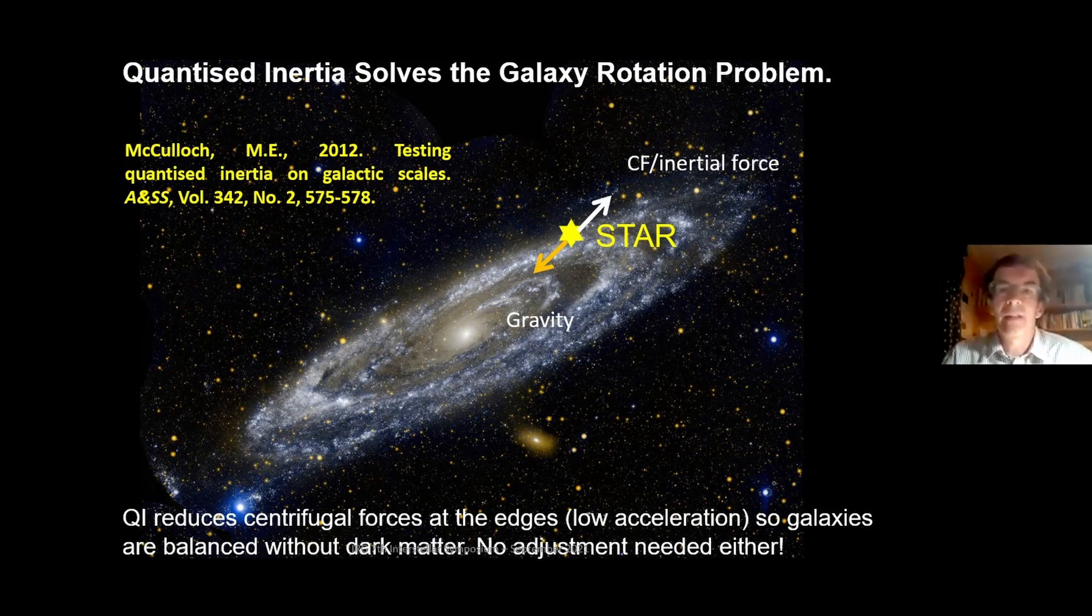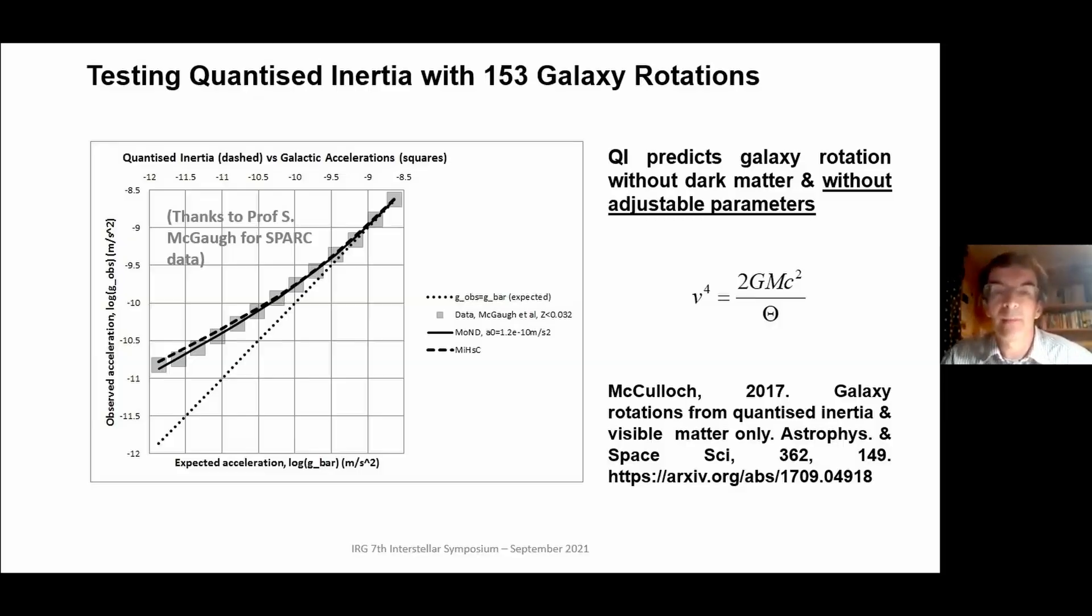This means that this is exactly what we need to explain galaxy rotation, because stars at the edge of galaxies are accelerating very slowly. So in the theory, the inertial forces they see reduce, and it turns out that they reduce so they're exactly balanced by gravity, so it works very well.